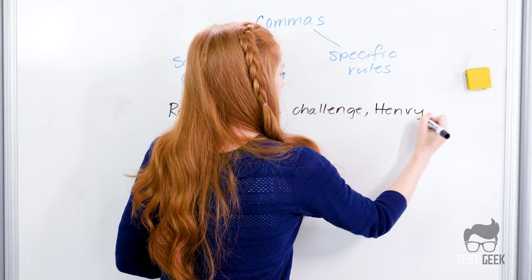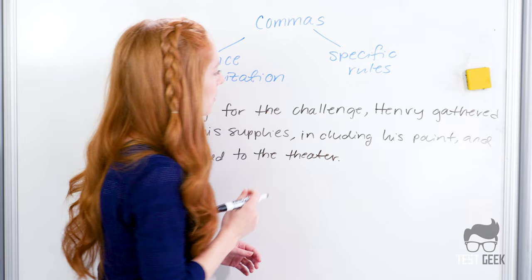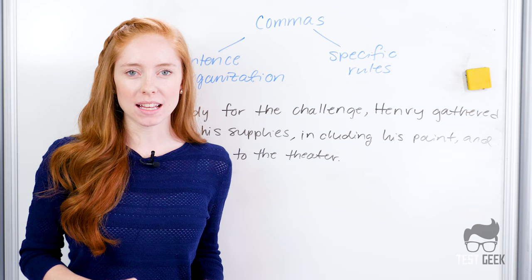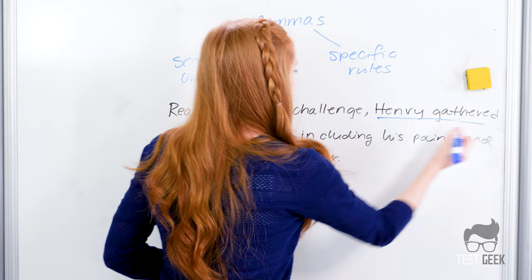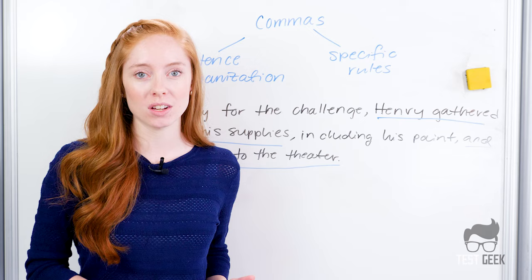Let's look at an example. Ready for the challenge, Henry gathered up his supplies, including his paint, and headed to the theater. So what's our basic sentence here? What's the main thing that we're trying to say? Well, I'd say it's Henry gathered up his supplies and headed to the theater. This contains our subject and our verb. It's the main thing we're trying to say.